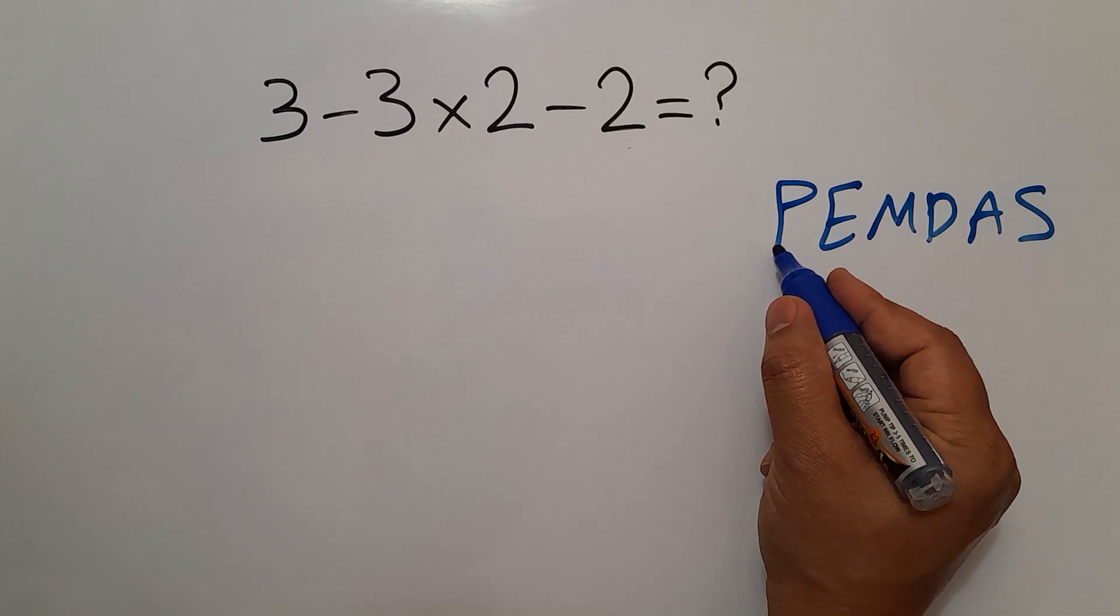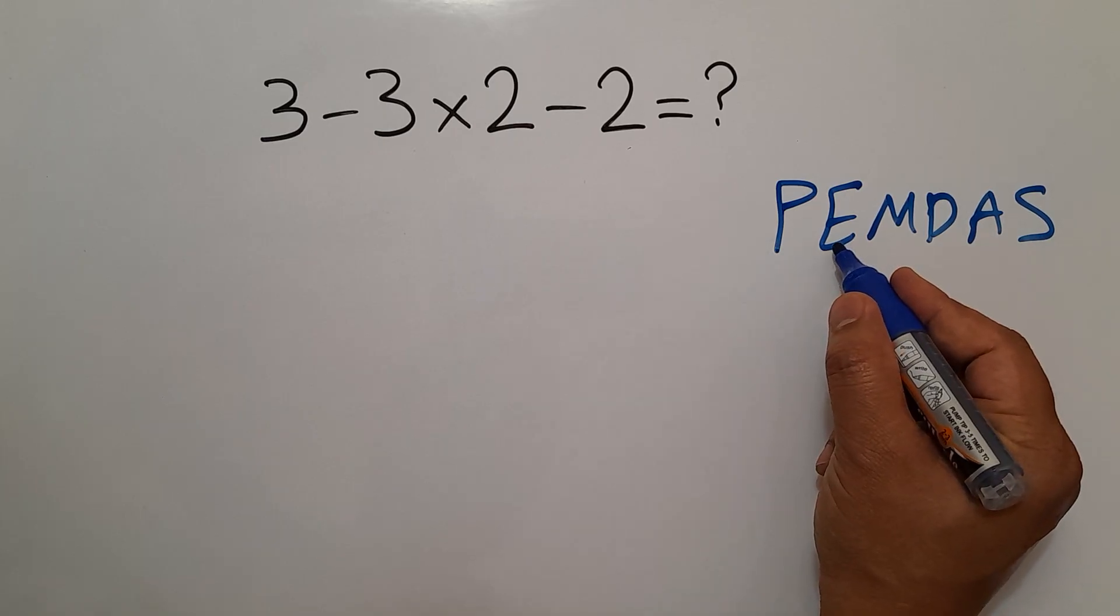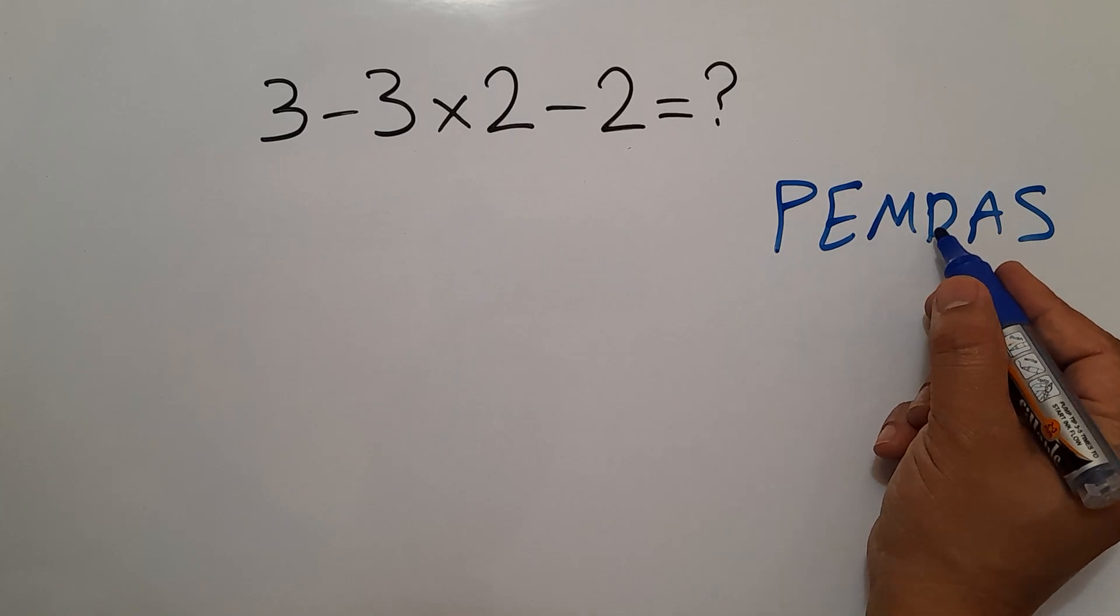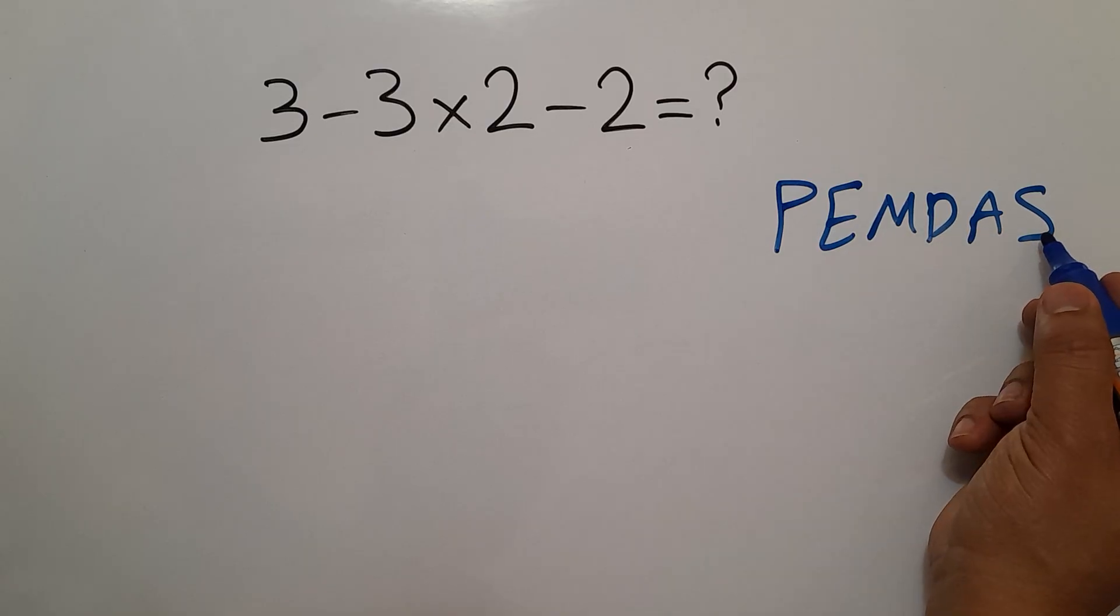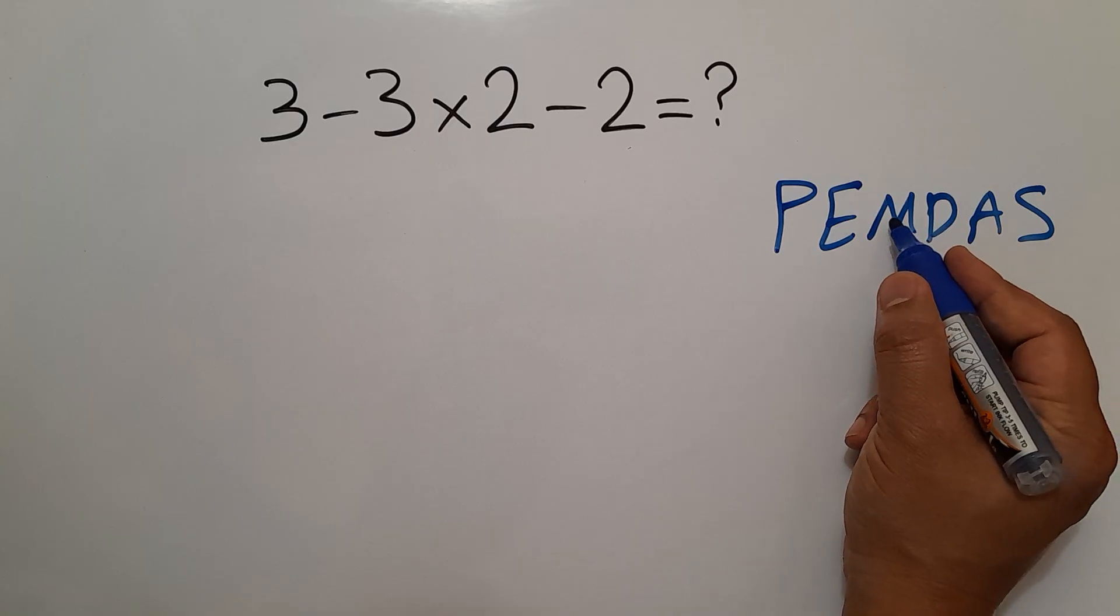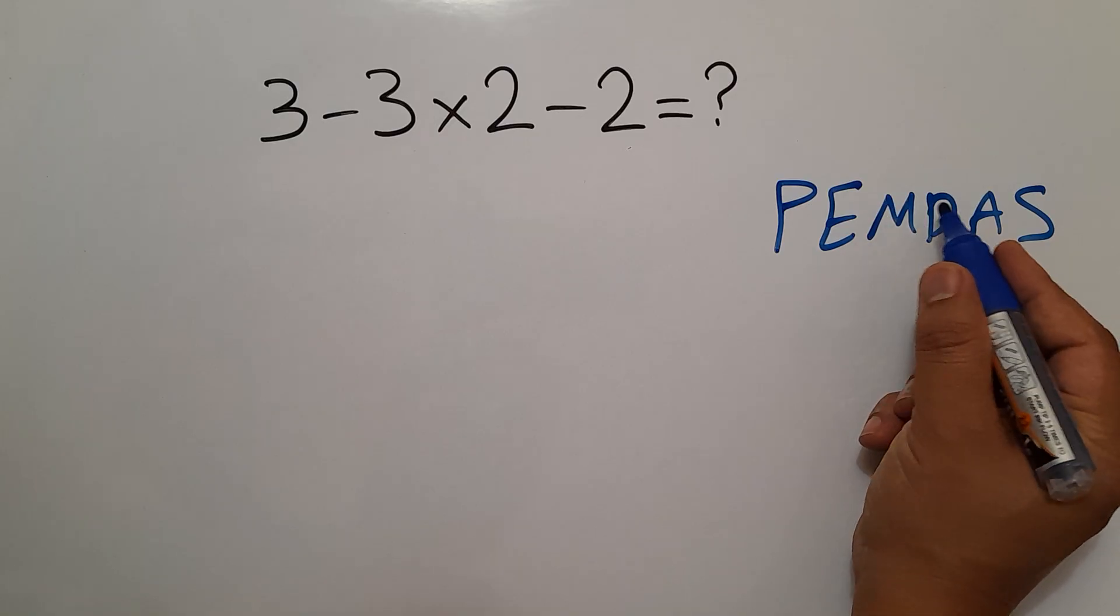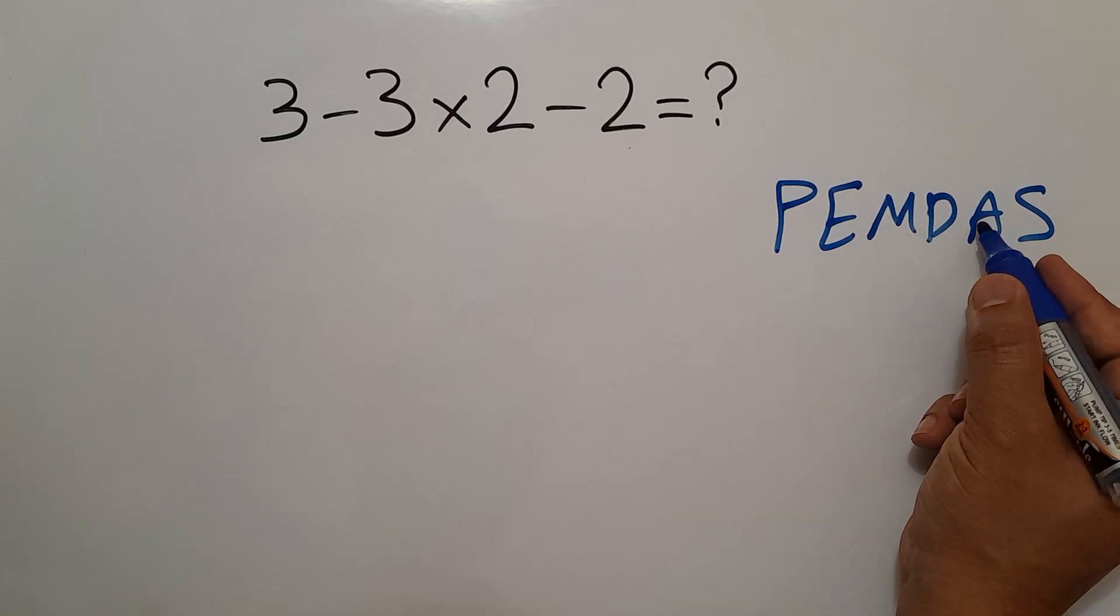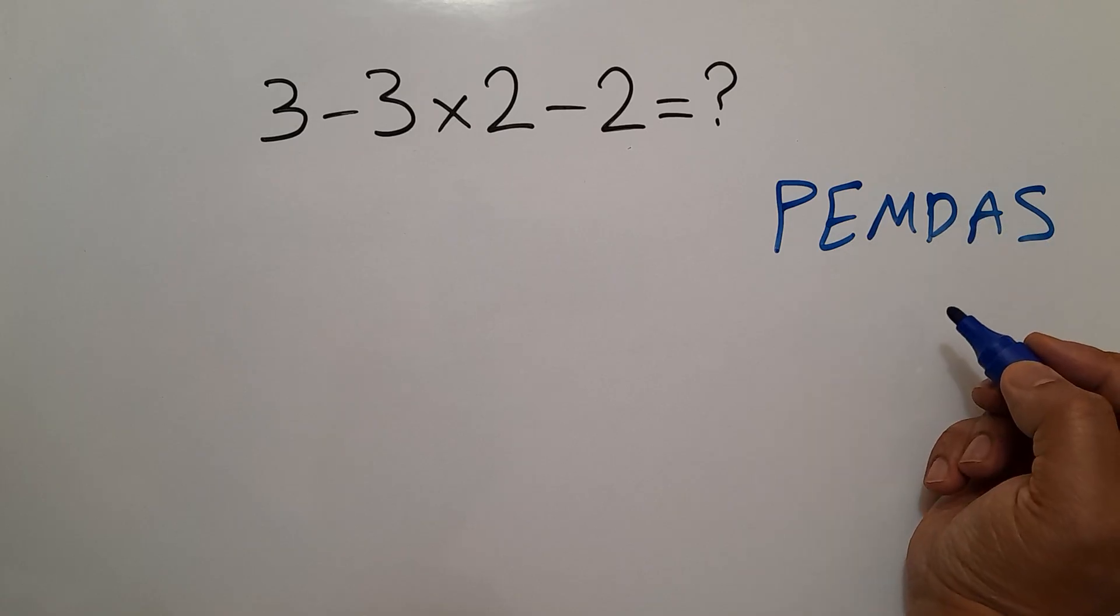We first do parentheses, then exponent, then multiplication and division, and finally addition and subtraction. Remember that multiplication and division have equal priority, and we work from left to right, and the same applies to addition and subtraction.